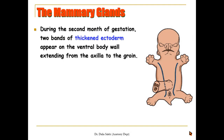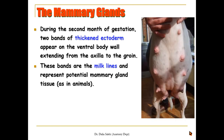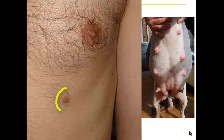During the second month of gestation, two bands of thickened ectoderm appear on the ventral body wall, extending from the axilla down to the groin. These two bands are called the milk lines, and along these lines mammary gland tissue can develop. In humans, only the pectoral portion of these milk lines will persist and develop into the adult mammary gland. However, if there is an excess nipple or breast along these milk lines, we call them supernumerary breasts or supernumerary nipples.